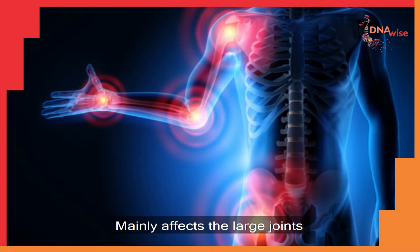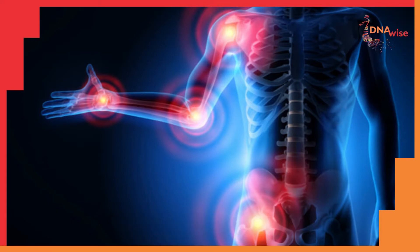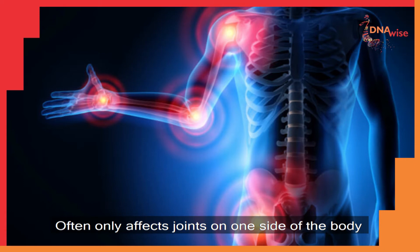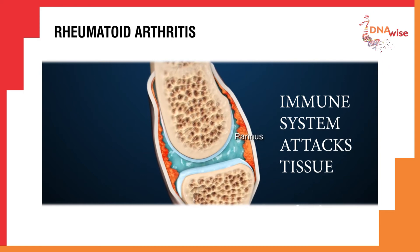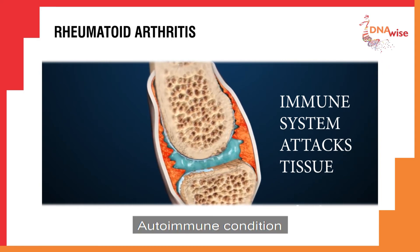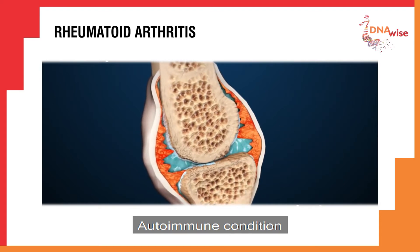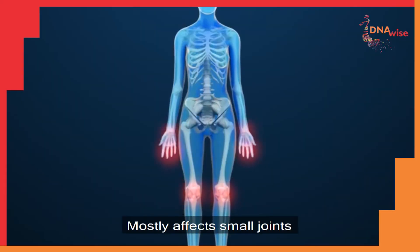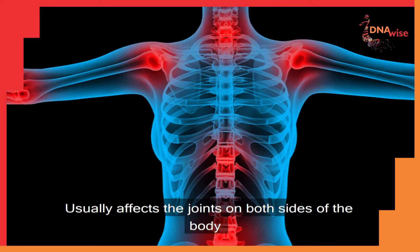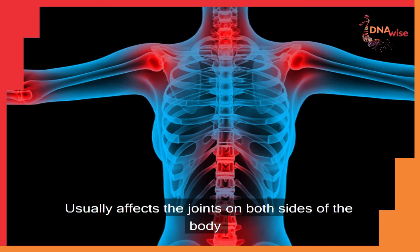Osteoarthritis mainly affects the large joints and often only affects one side of the body. Rheumatoid arthritis is a long-standing progressive condition which occurs when the body's immune system attacks its own joints. It mostly affects small joints as well as some other organs, and usually affects joints on both sides of the body — for example, if it affects one hand, it also affects the other.